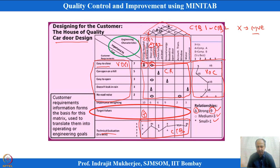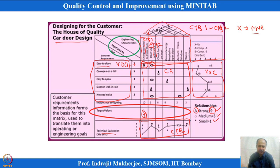The CTQ relationships shown in the roof are defined by quality personnel, production personnel, or experts based on literature and evidence. If a voice of the customer is not addressed by any CTQ, we are missing something in the design. Every CTQ is important and addresses a voice — if a CTQ fails, customers will be dissatisfied.